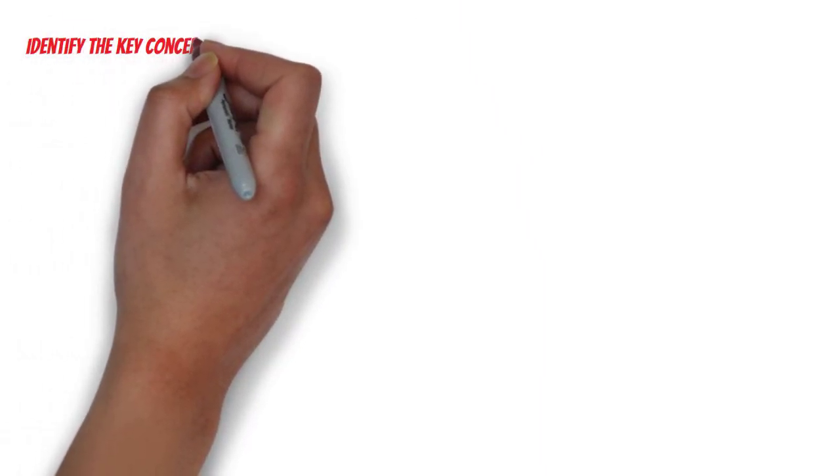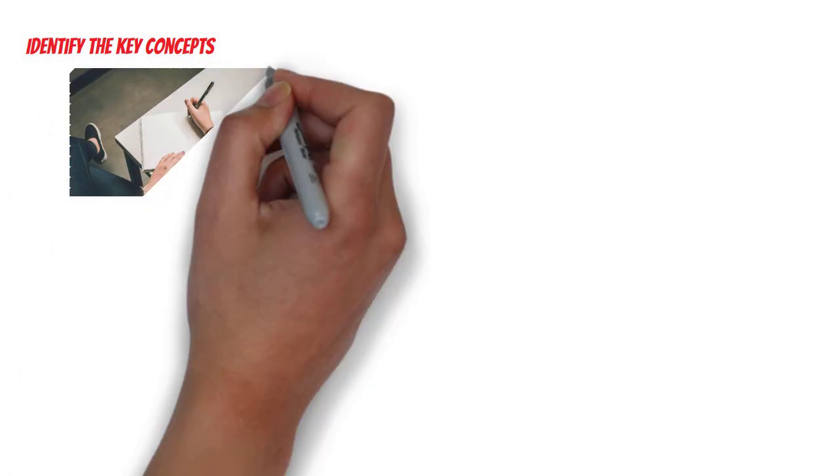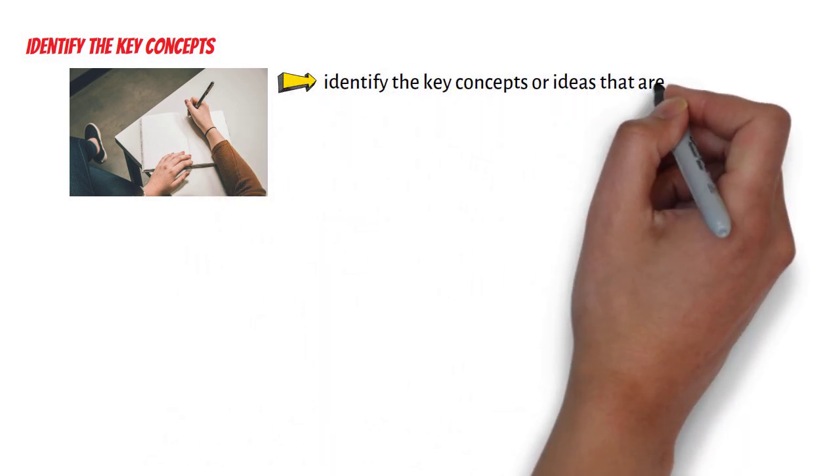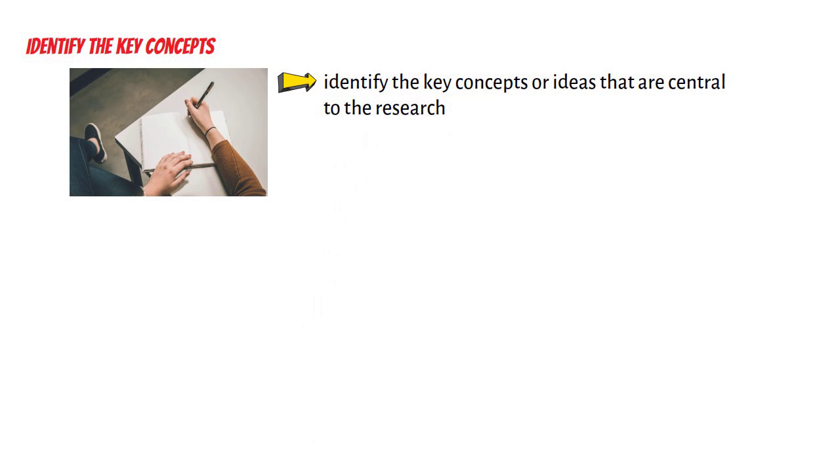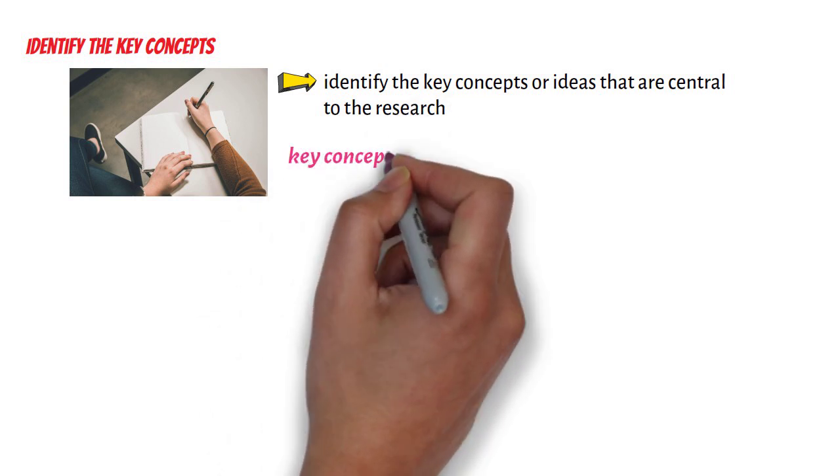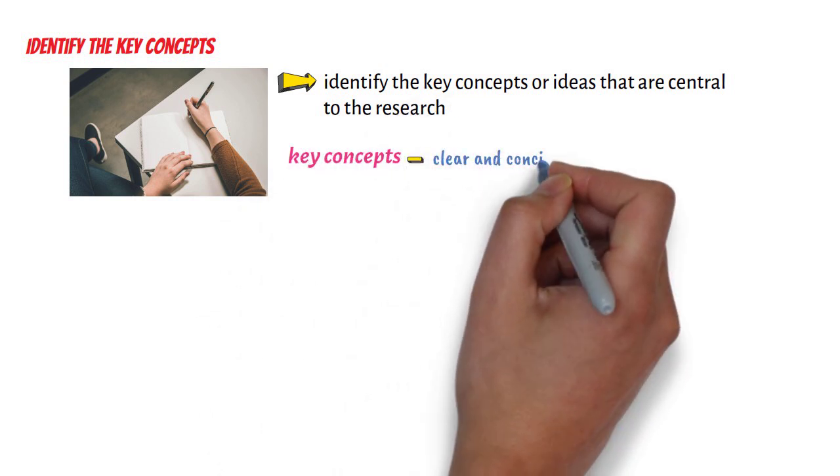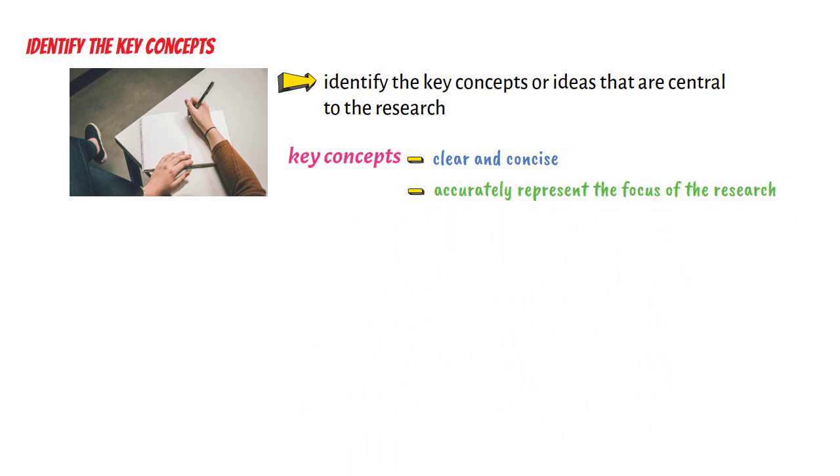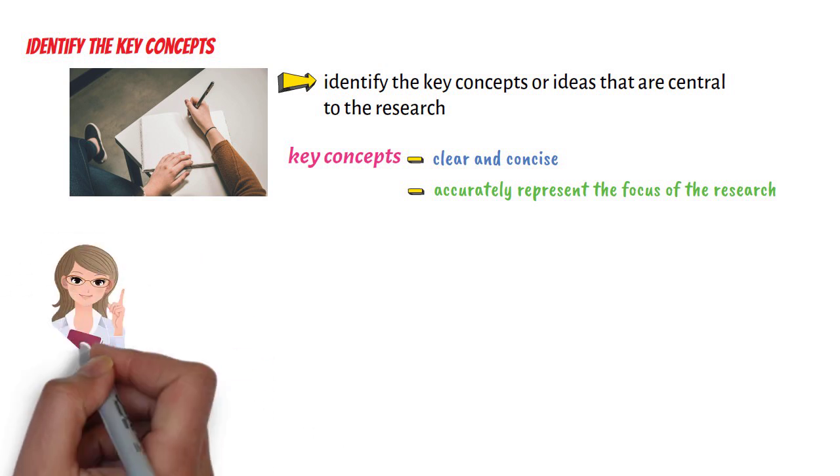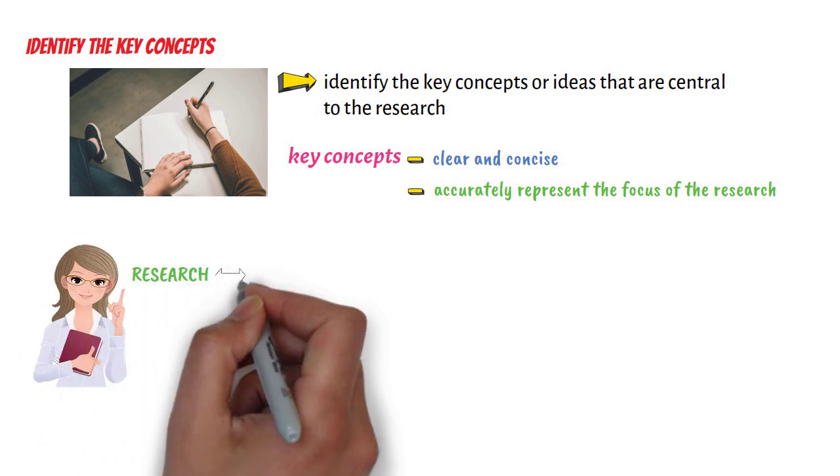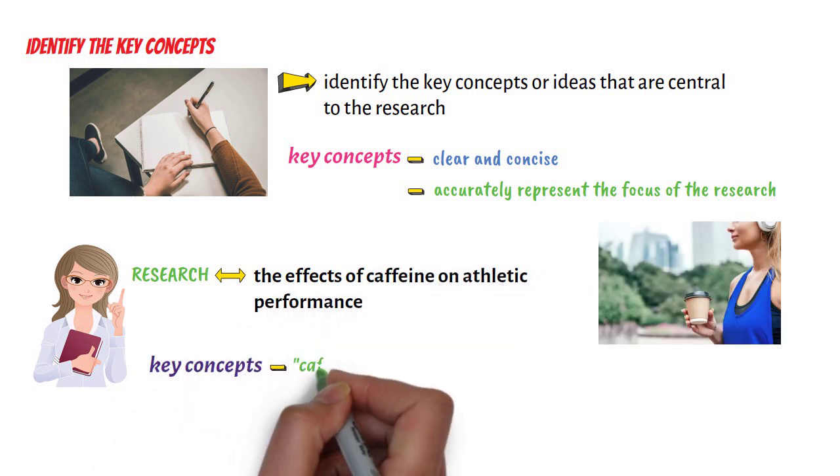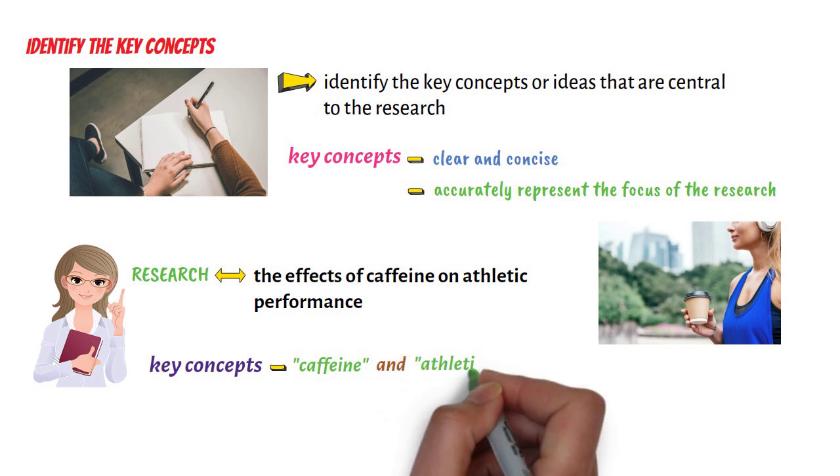First, identify the key concepts. The first step in writing a research title is to identify the key concepts or ideas that are central to the research. These key concepts should be clear and concise, and they should accurately represent the focus of the research. For example, if the research is about the effects of caffeine on athletic performance, the key concepts might be caffeine and athletic performance.